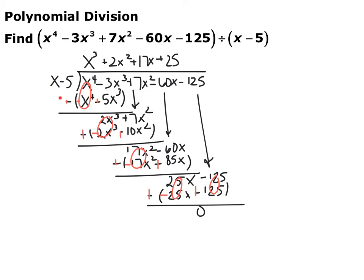Just like long division, you're going to subtract that off. I like to distribute my negative inside to both terms so I don't forget. These should always go away. Then I add and get 2x cubed, bring down 7x squared, and start over. What do I multiply x by to get 2x cubed? It has to be 2x squared. Multiply back: 2x cubed, and 2x squared times negative 5 is negative 10x squared — and so on. This one ended up with no remainder, so the final answer is x cubed plus 2x squared plus 17x plus 25.